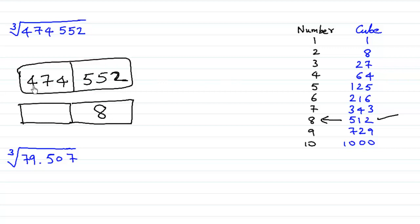And now what about this 474? 474 is not written anywhere over here but 474 definitely lies in between 343 and 512. So which is the smaller number? The smaller number is 343 and what is written opposite to that? 7 is written opposite to that. So our answer to this is 78.